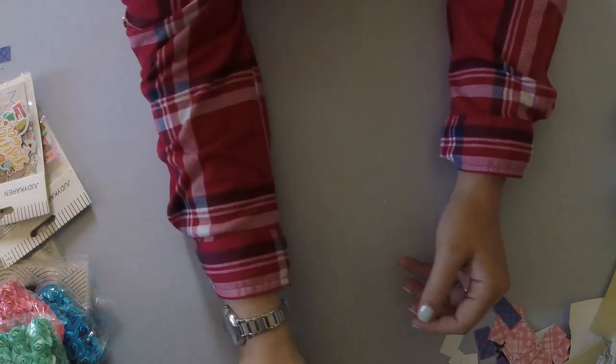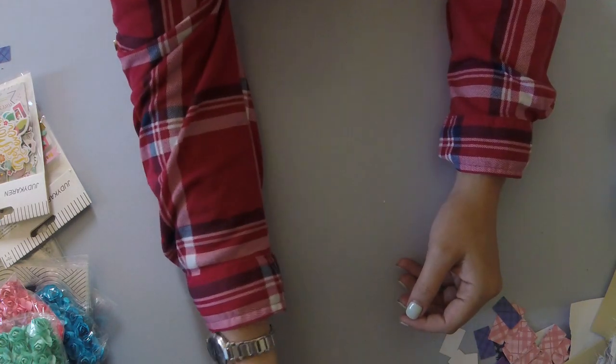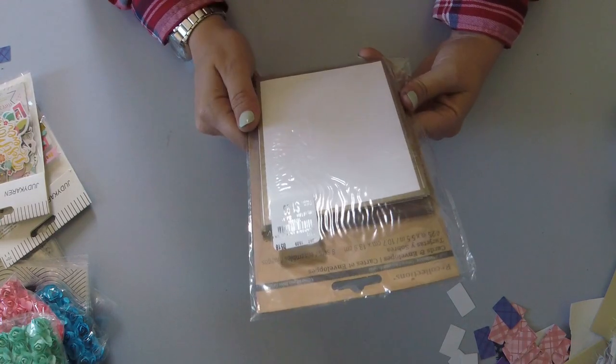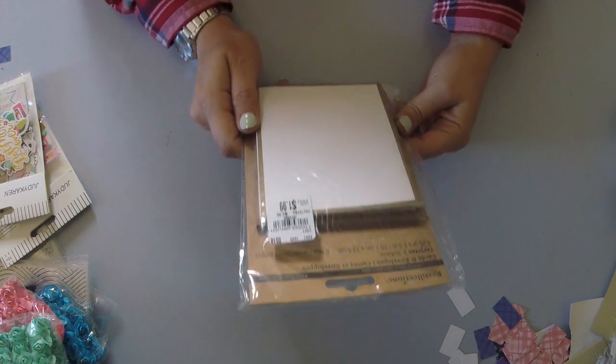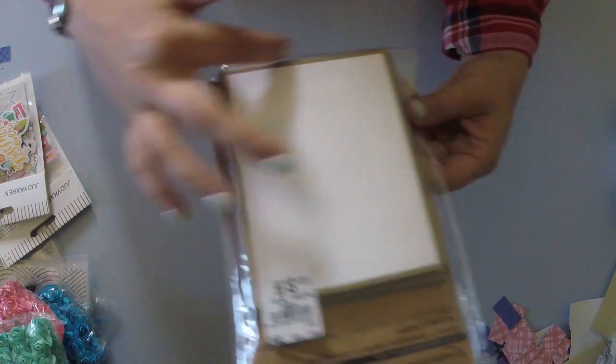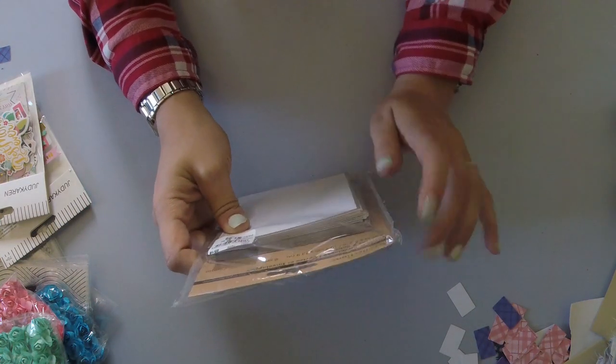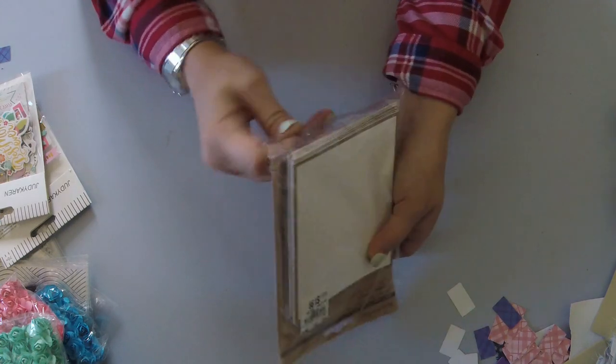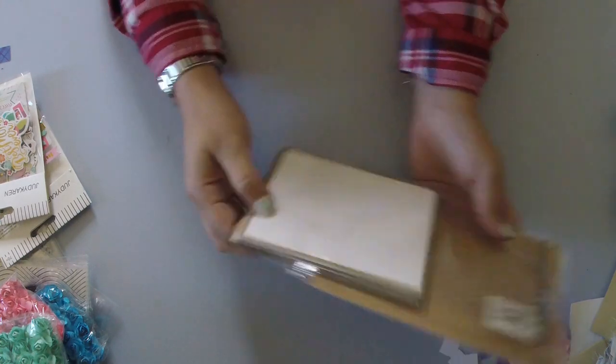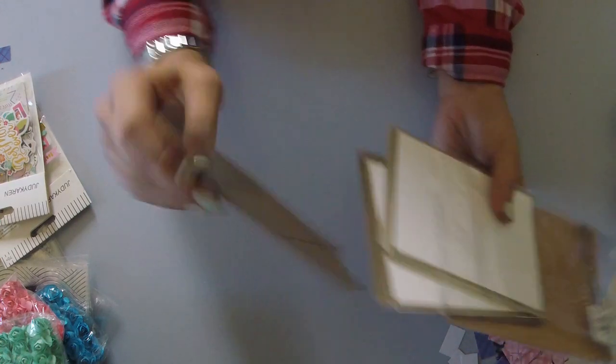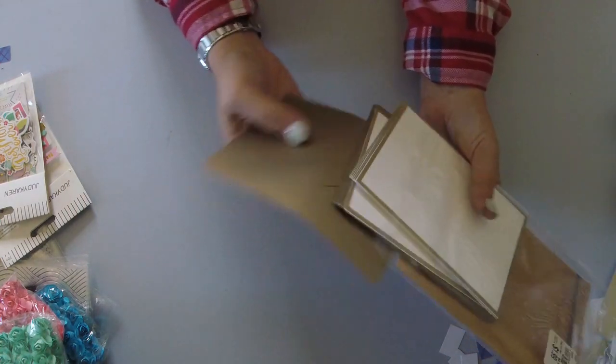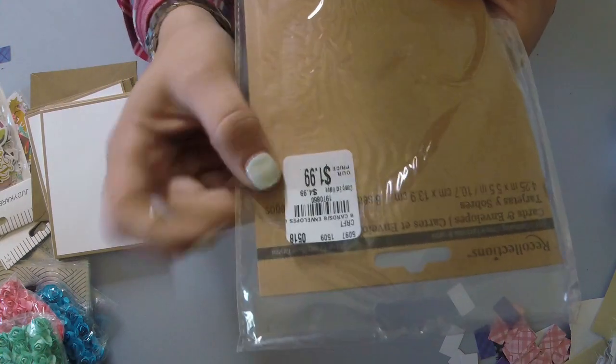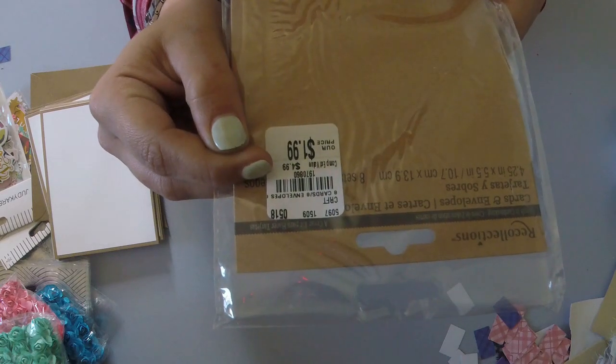My next item from Tuesday morning are these recollection cards. This is the four point two five by five and a half standard A2 card. I like the gold borders. And then it comes with the gold colored envelopes as well. So you get those, and then you get these envelopes. There are eight of those, and the number on this is one nine seven zero eight six zero.